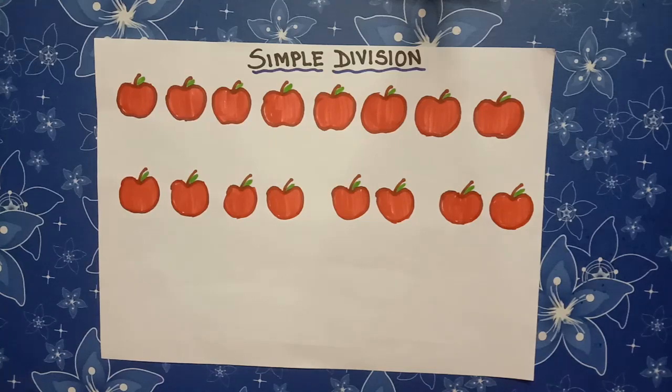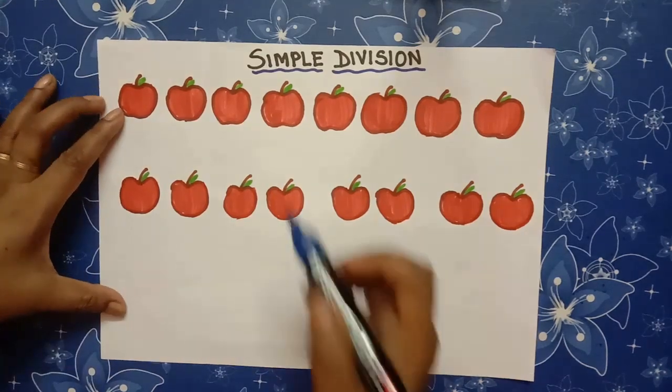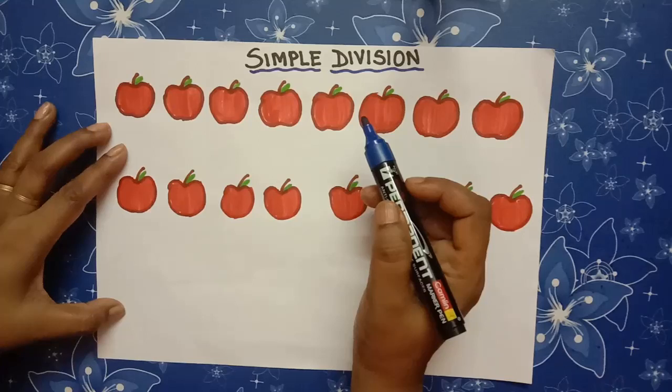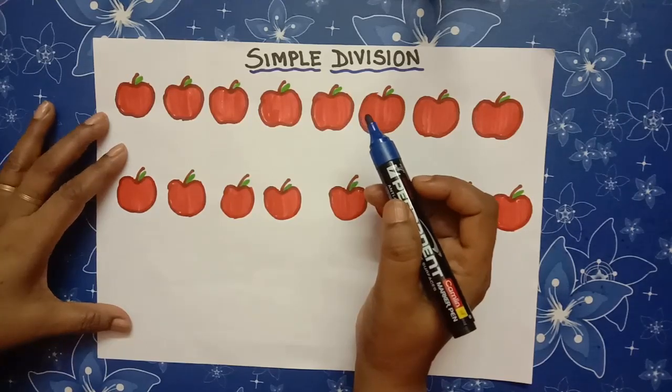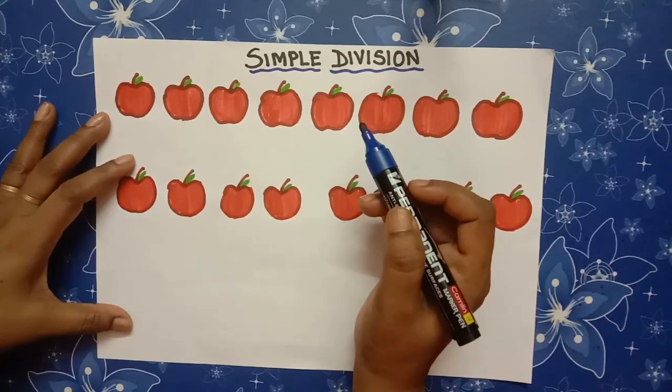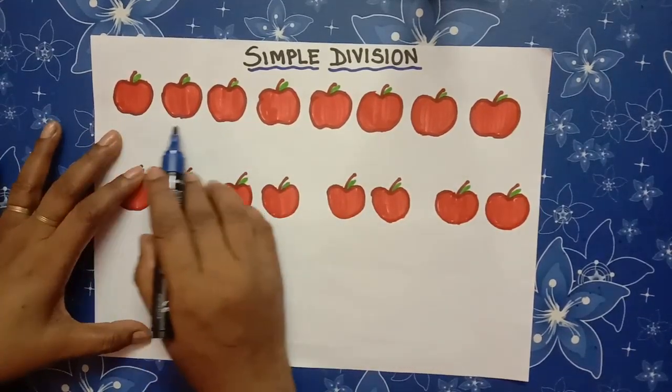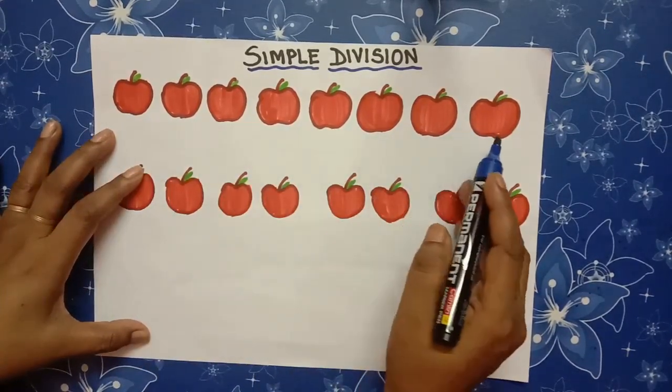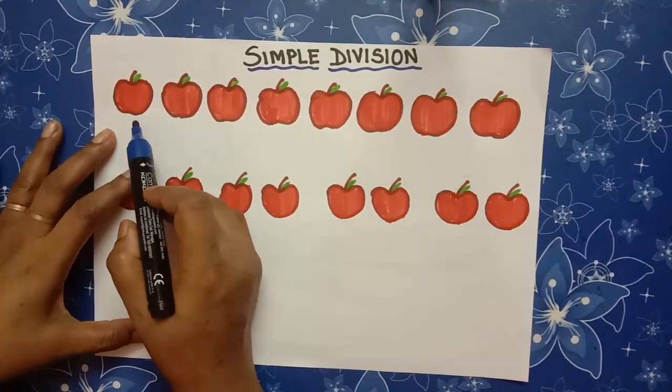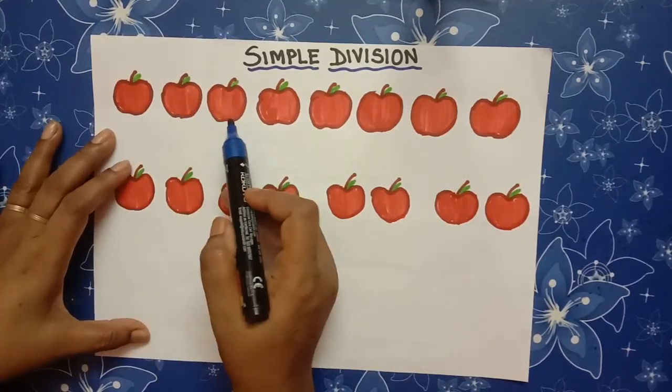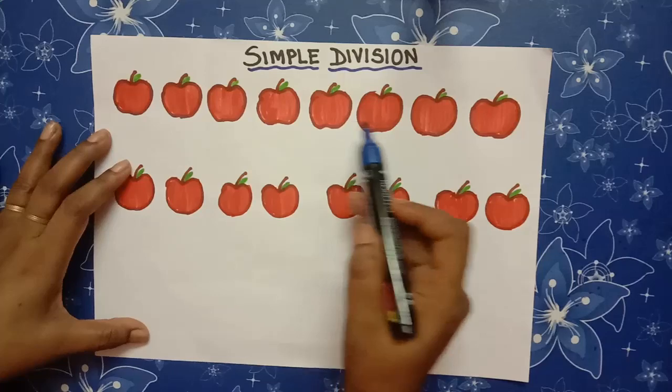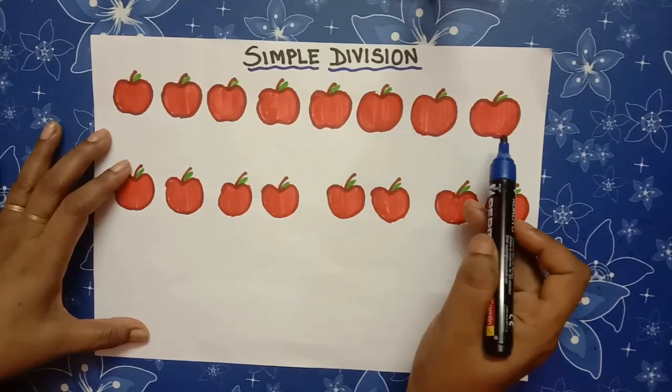Now, next, simple division. What would you do when you have to share 8 apples equally among 4 children? See children. There is a picture of apples. Count and see how many apples are there. 1, 2, 3, 4, 5, 6, 7, 8.